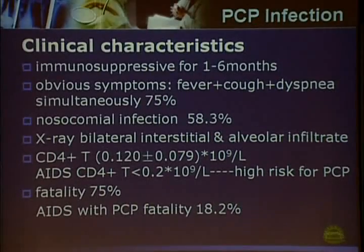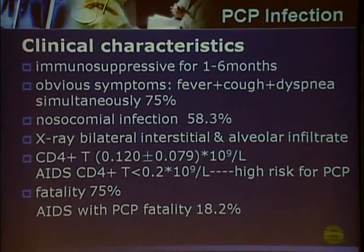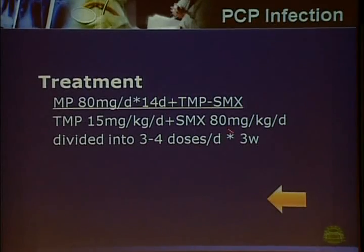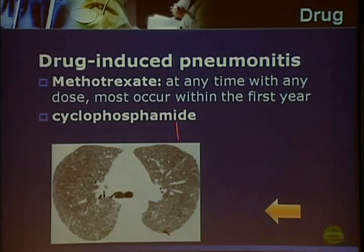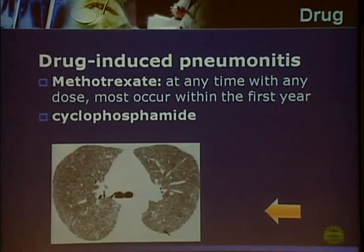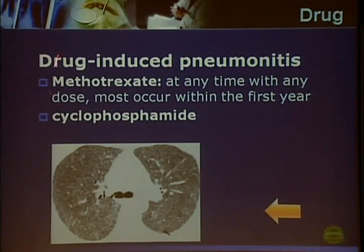PCP infection patients may have high fever, non-productive cough, and dyspnea. On X-ray or chest CT, bilateral interstitial infiltration is seen. Patients usually have very low CD4-positive T cells, and mortality is very high if not treated properly with corticosteroids and trimethoprim-sulfamethoxazole (TMP-SMX). CMV pneumonia can also complicate ILD in myositis patients and should be excluded. Drug-induced pneumonitis from methotrexate—commonly used in myositis—can cause pneumonia at any time with any dose, most commonly within the first year.